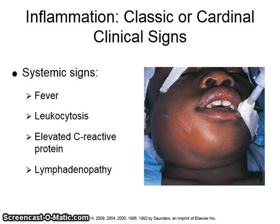Leukocytosis is a temporary increase in the number of white blood cells circulating in the blood. Lymphadenopathy is abnormal enlargement of lymph nodes. C-reactive protein is a non-specific protein produced in the liver that becomes elevated during episodes of acute inflammation or infection.